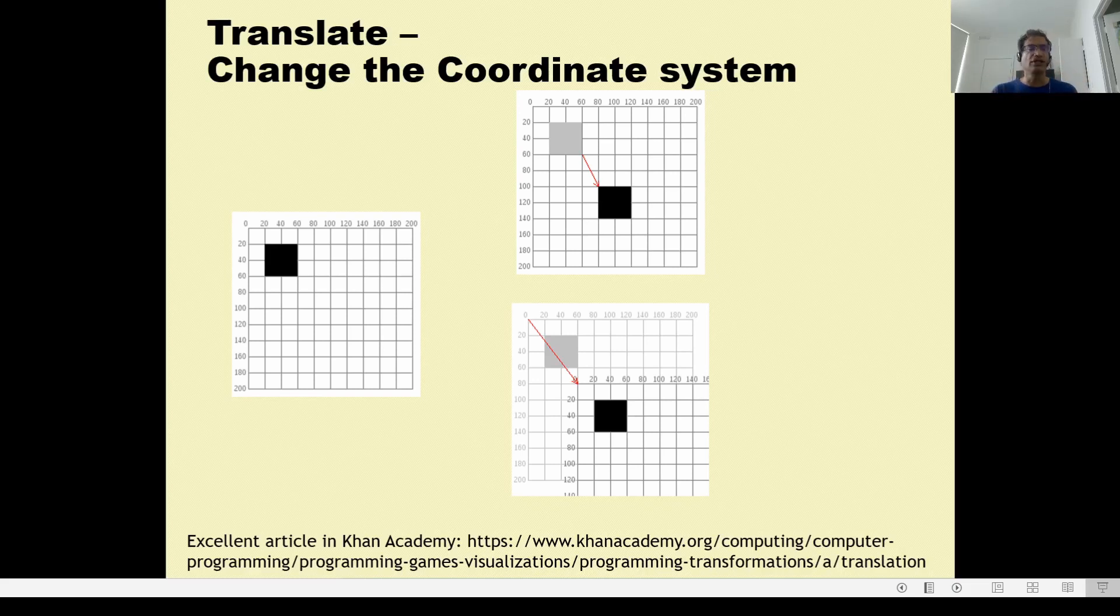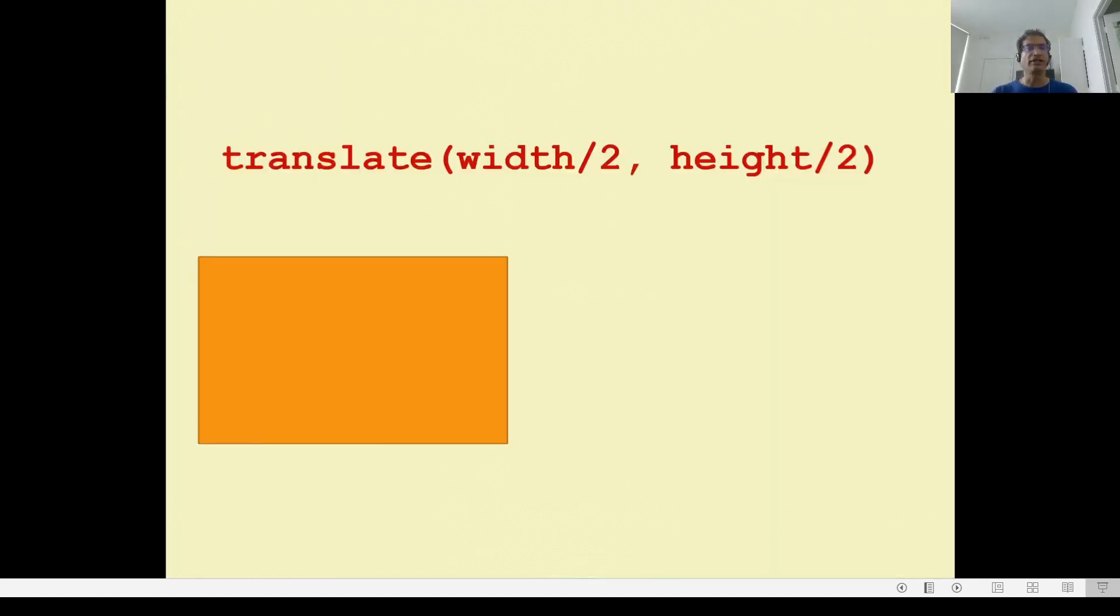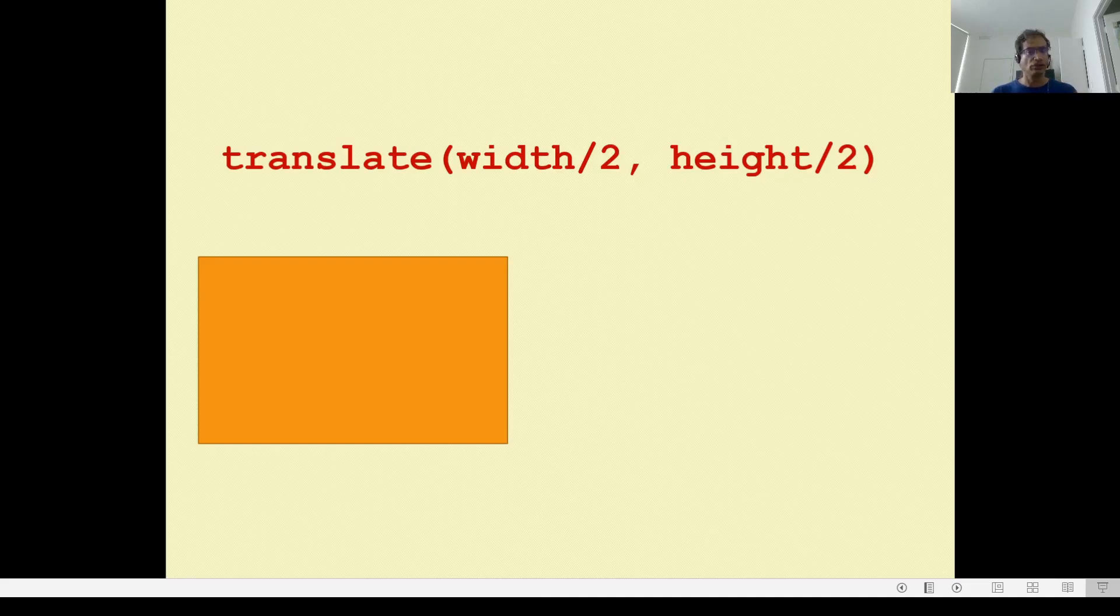Now this may be confusing. There's an excellent article on this in Khan Academy that I found so I'll give you another link. Do read it. Once you start using these things, it will not be daunting at all. But translate is so useful that I want to go over it. And the most commonly used translate command is translate width by two, height by two - half the canvas width and half the height.